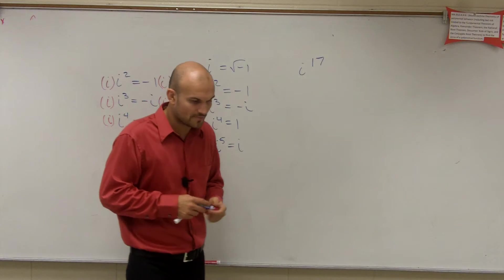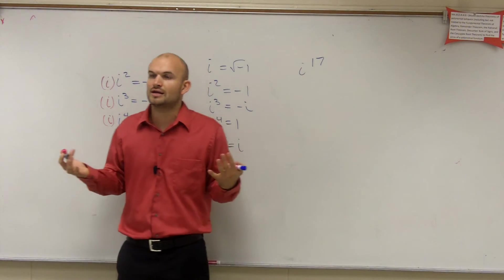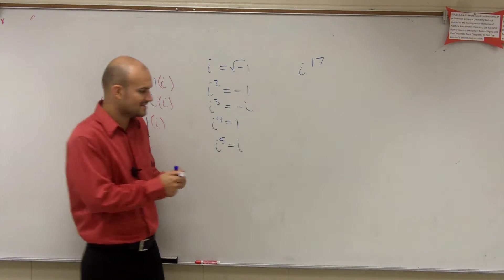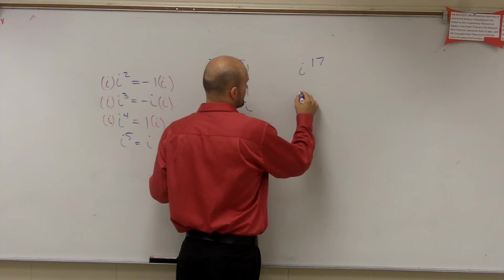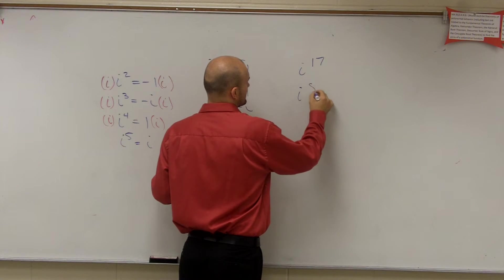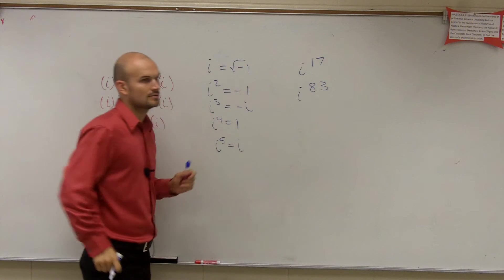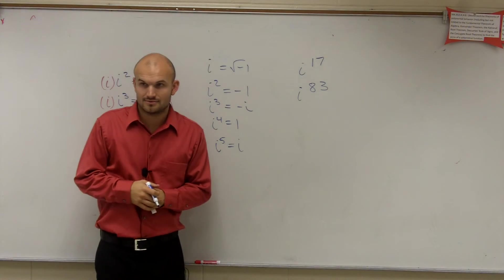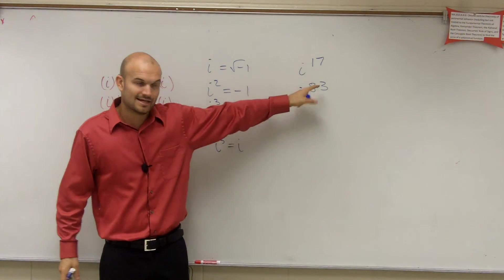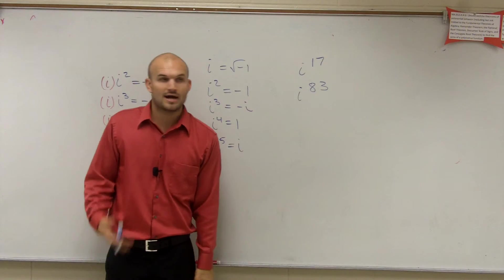So yes, what you're going to do, all right, is you're going to take your exponent. If I wanted to figure out, if I said, what is i to the 83rd power? If I wanted to figure this out, all right, what you're going to do is you're going to take 83 and divide it by 4.